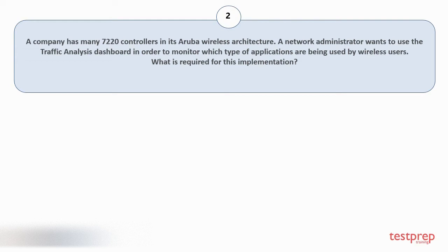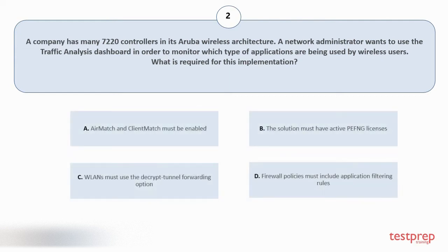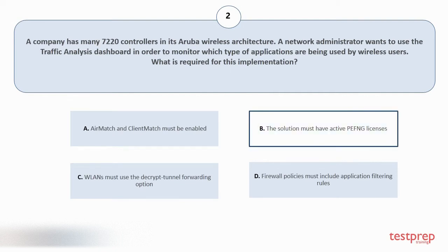Question number 2: A company has many 7220 controllers in its Aruba wireless architecture. A network administrator wants to use the traffic analysis dashboard to monitor which types of applications are being used by wireless users. What is required for this implementation? Option A: AirMatch and ClientMatch must be enabled. Option B: The solution must have active licenses. Option C: VLANs must use the decrypt tunnel forwarding option. Option D: Firewall policies must include application filtering rules. The correct answer is option B.